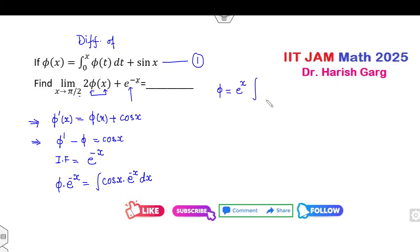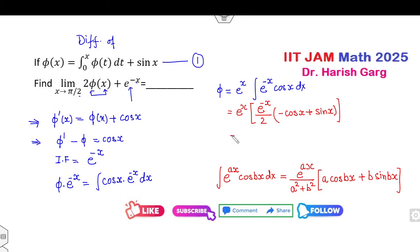Is it okay? Any doubt up to here? Now how you can find the solution? This is φ = e^x integration of e^(-x) cos x. Clear. Now how you can solve this? As you know, integration of e^(ax) cos(bx), this integration is e^(ax) divided by a² + b² into (a cos bx + b sin bx).